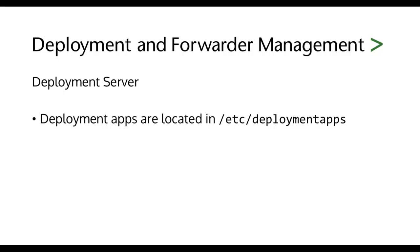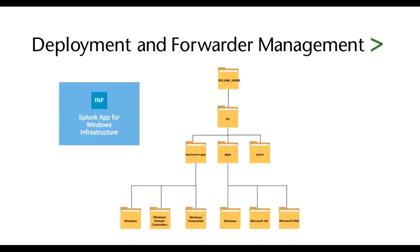Deployment apps are located in /etc/deployment-apps on the Splunk deployment server. In smaller instances of Splunk, the Splunk search head might double as the deployment server. For example, let's take the Splunk app for Windows Infrastructure, a very popular app.